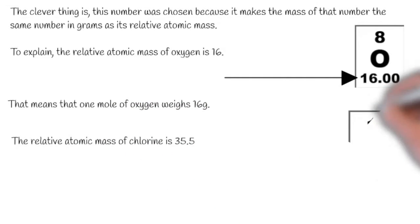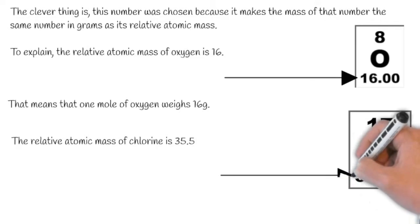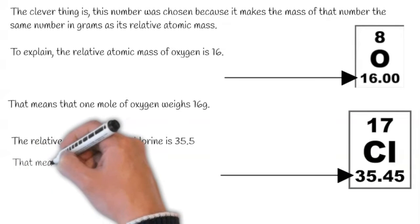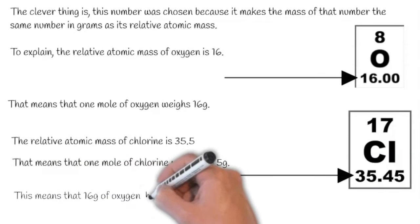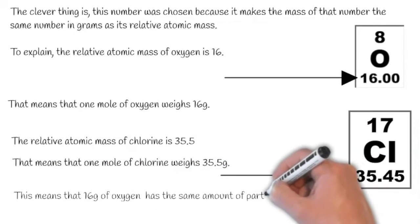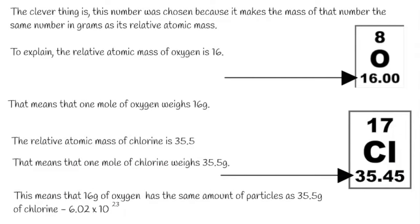The relative atomic mass of chlorine is 35.5. We can find that here. That means that one mole of chlorine weighs 35.5 grams. This means that 16 grams of oxygen has the same amount of particles as 35.5 grams of chlorine, which is a mole.